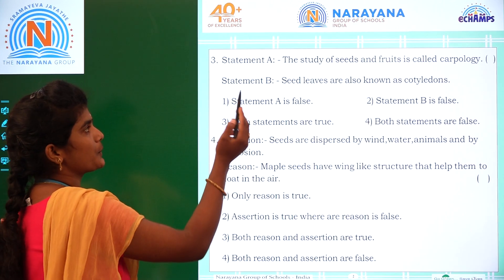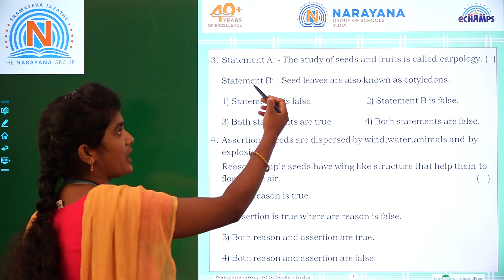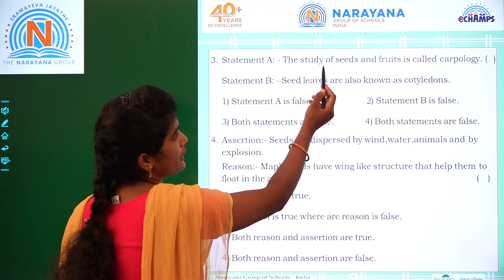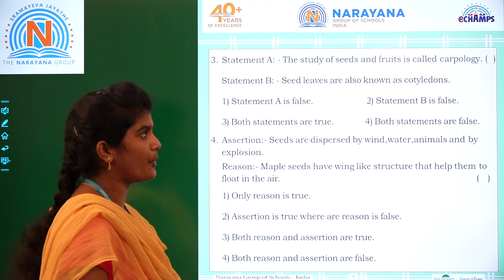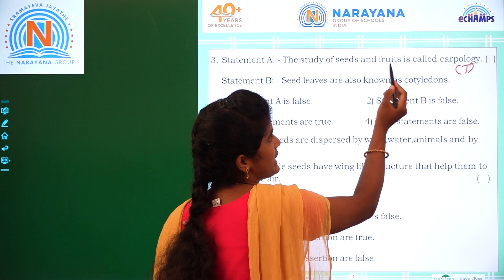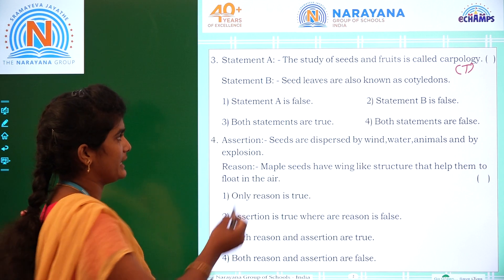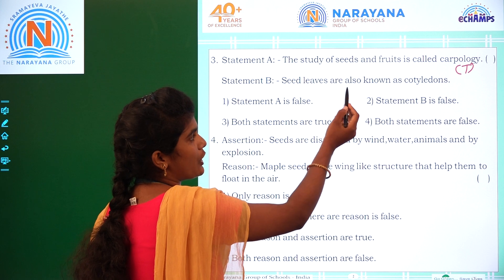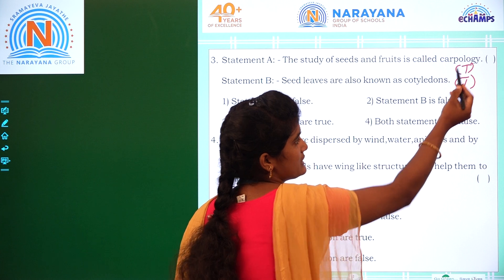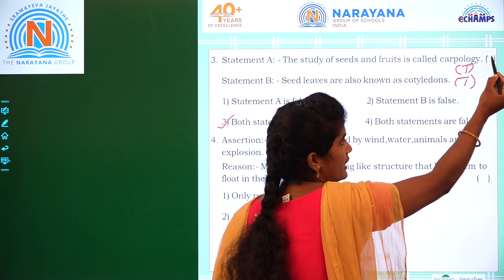Coming to the third question: there are two statements. We have to find which is true or false, or whether both are true or both are false. Statement A: the study of seeds and fruits is called carpology — that is true. Statement B: seedlings are also known as cotyledons — that statement is also true. So both statements are true, which is option 3.